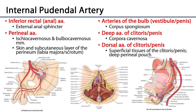There are also perineal branches serving the ischiocavernosus muscles, the bulbocavernosus muscle, and some of the skin about the perineum. Then we have arteries serving the erectile tissue: the artery of the bulb serves the bulb, the bulbospongiosus, or corpus spongiosum. The deep artery of the clitoris or penis serves the corpora cavernosa or the crura of the clitoris or penis.